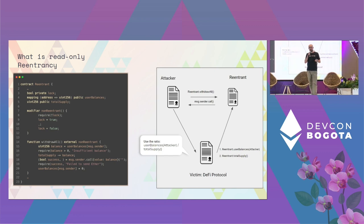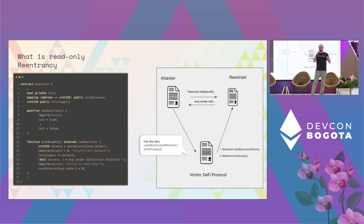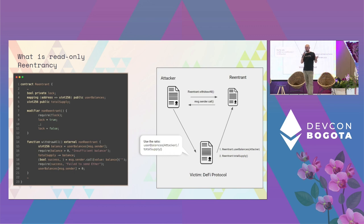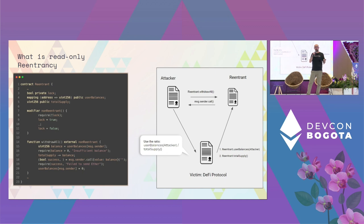However, nothing prevents the malicious user from making a call to another contract which reads the state of this contract. If someone reads the state at this point, what they're going to see is that the total supply has been reduced, but the balance of the user has not been set to zero. This means that the ratio, for example, is not going to be correct.